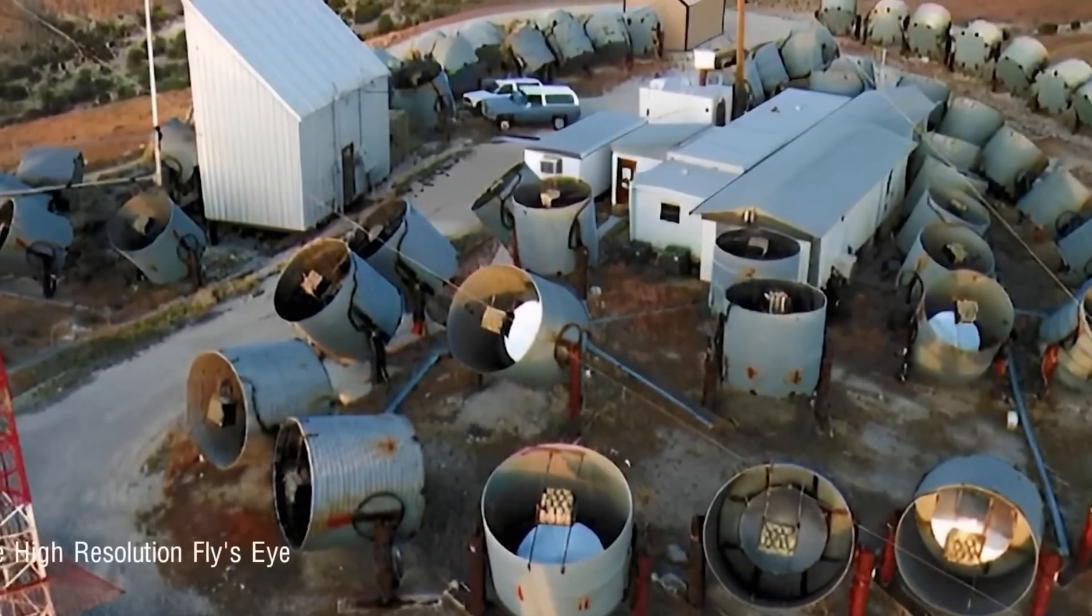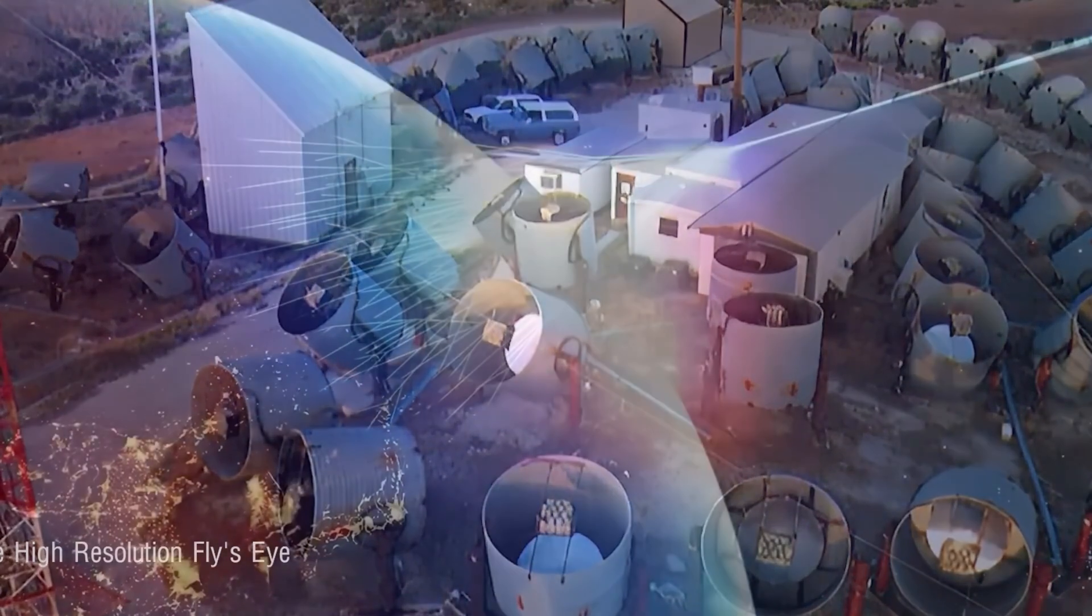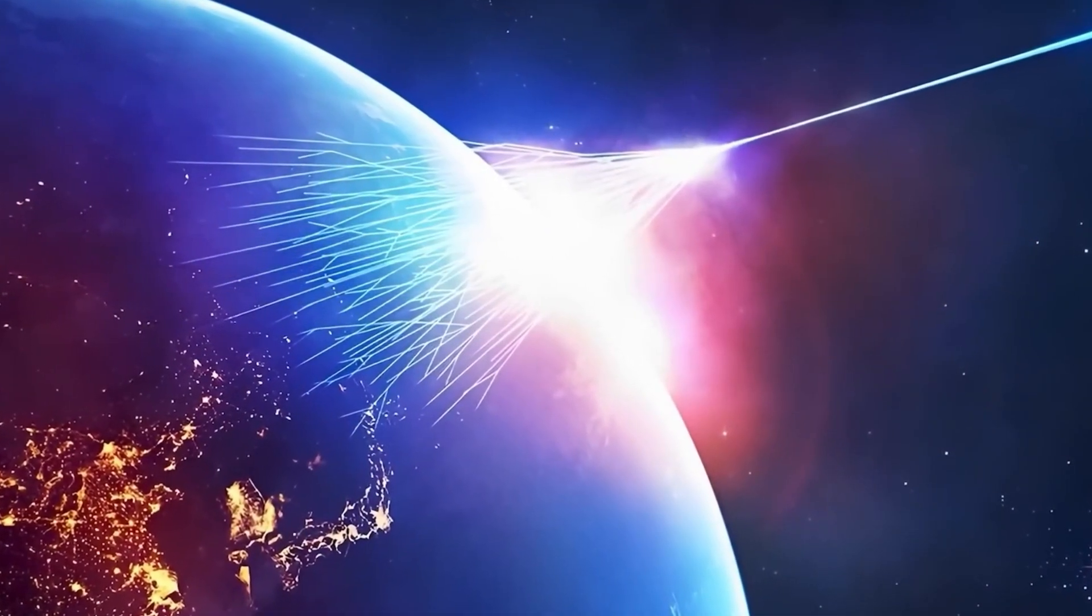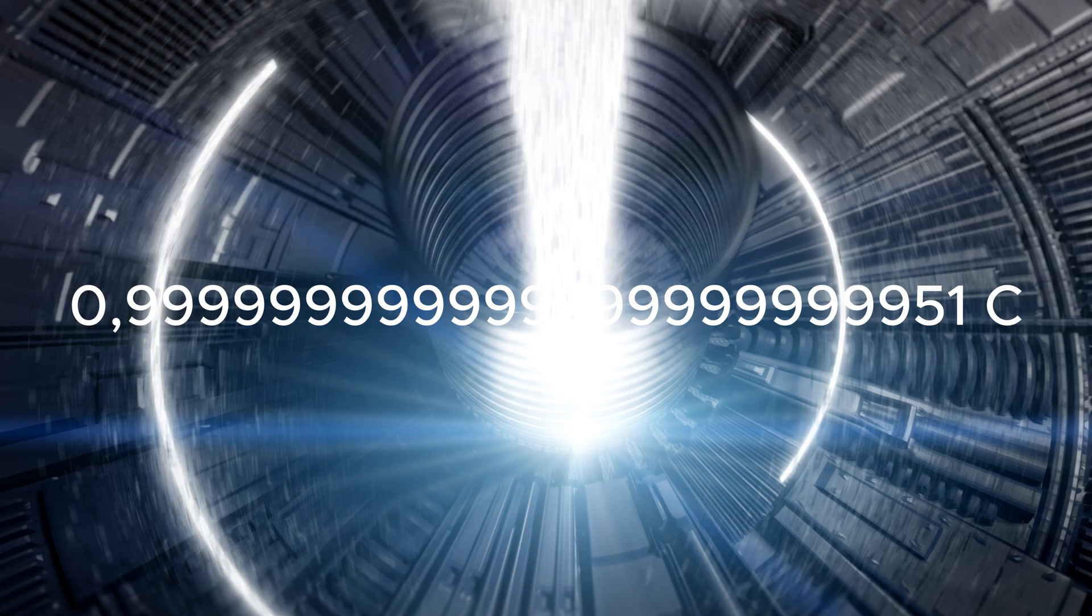Going back to October 1991, the Fly's Eye Cosmic Ray Observatory in Utah, USA, discovered an extremely high-energy cosmic ray, essentially a proton, moving at nearly the speed of light.